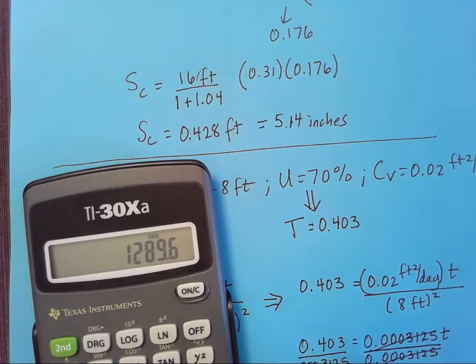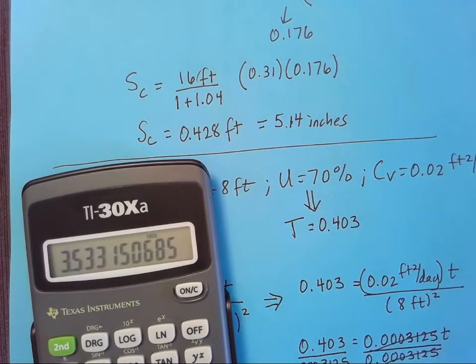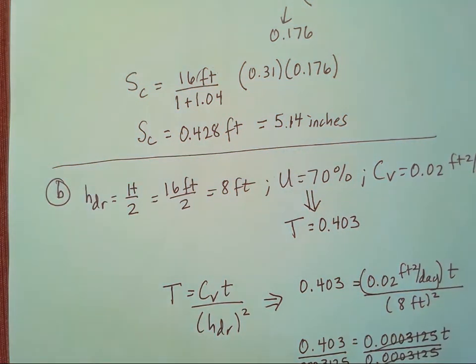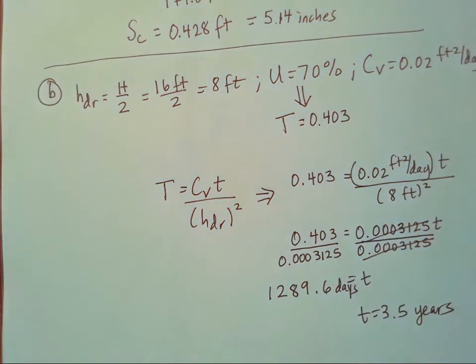Let's figure out how many years that is. Divide it by 365. So that's about three and a half years to get to that 70% consolidation. Okay. That's it. Those are the geotech homework problems for chapter six.